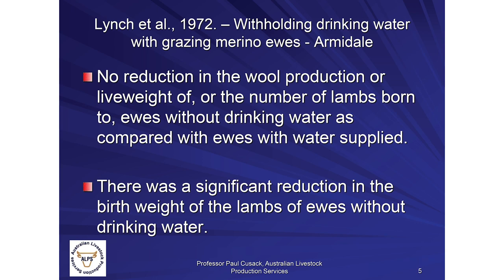The same number of lambs were born to ewes that did not have drinking water compared with ewes that had water constantly supplied. However, there was a significant reduction in the birth weight of lambs from ewes without water, which can translate into increased mortality in newborn lambs. More frequently, lighter weight lambs result in higher lamb mortalities. It could be as simple as a reduction in delivery of amino acids and glucose to the fetus to allow its rapid weight gain in the last trimester.